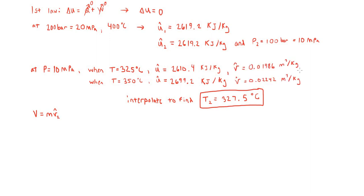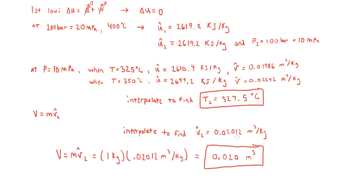In the steam tables at 10 megapascals, at 325 degrees the specific volume is 0.01986 meters cubed per kilogram, and at 350 degrees it is 0.02242 meters cubed per kilogram. Using the known final temperature of 327.5 degrees and interpolating, the final specific volume is 0.02012 meters cubed per kilogram. Plugging this into our equation and recalling that there is one kilogram of steam total within the vessel, the final volume of the vessel is 0.02 meters cubed.